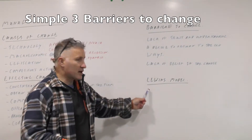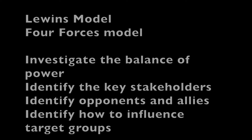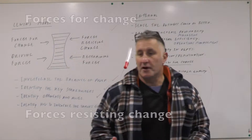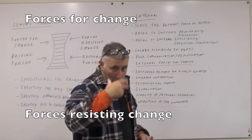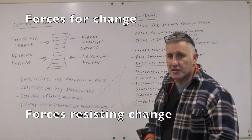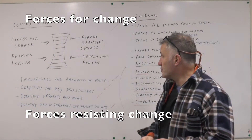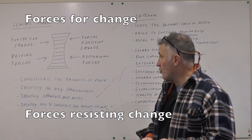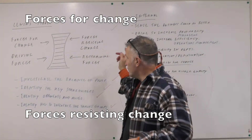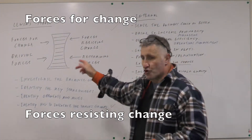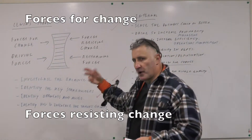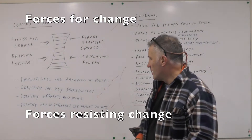The first thing we're going to look at is Lewin's model. So here we have Lewin's model — the forces for change and the forces resisting change. The driving forces that would enable you to create that change, and the restraining forces — maybe there's not enough money within the firm, or whatever.